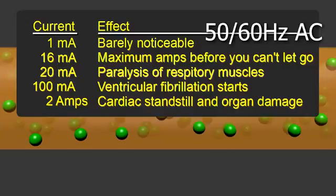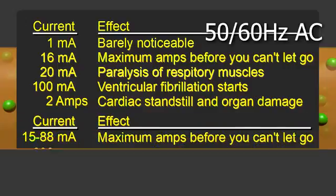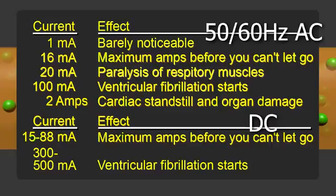That's what you get from your wall socket in many countries. For direct current, or DC, the current has to be higher, but the numbers are still in the milliamps.